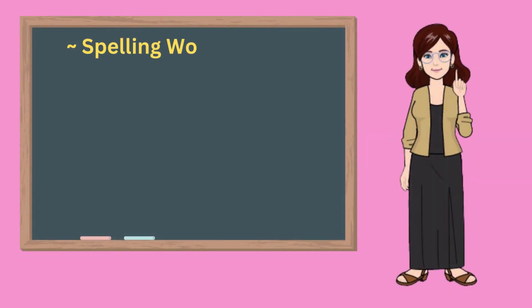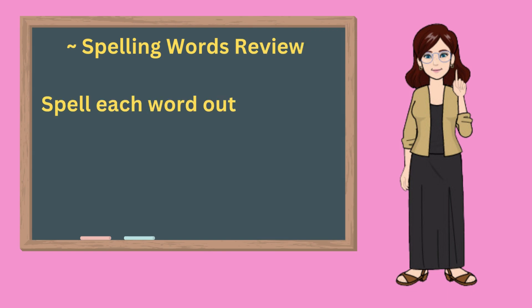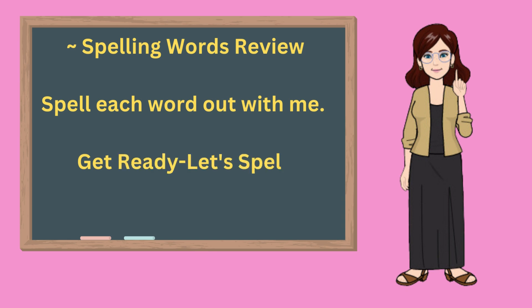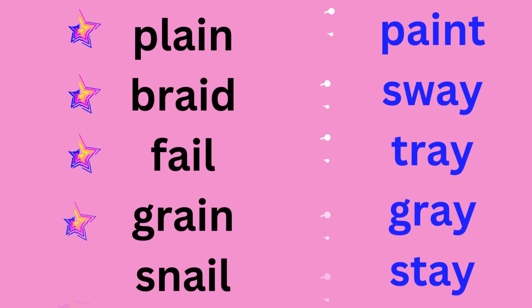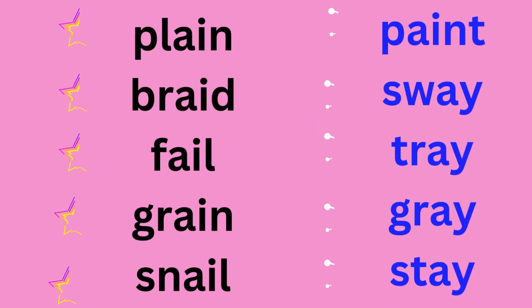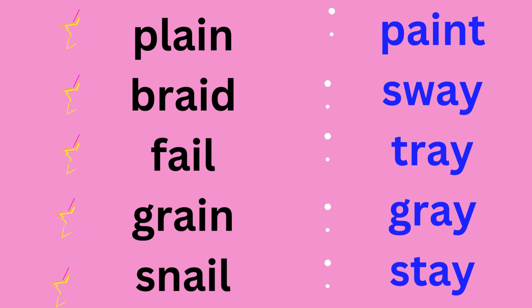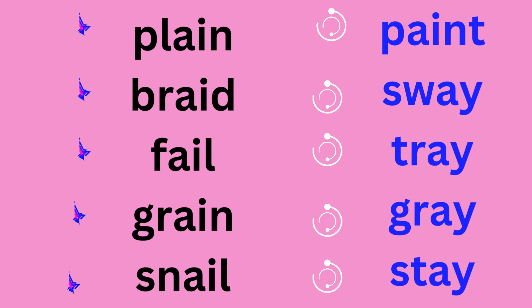Spelling review. Spell each word out with me. We will spell each word in the black column, then the blue column, then the green column, and then the red column. Get ready, let's spell. Black column: Plain — P-L-A-I-N, plain.